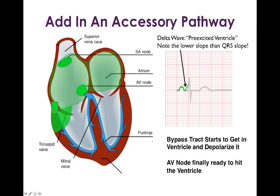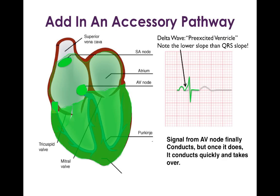By the time the AV node has fully depolarized and is ready to conduct down the His-Purkinje system into the ventricles, the bypass tract has had a head start and has depolarized part of the ventricle. From here on, the AV node takes benefit of the His-Purkinje system while the bypass tract continues depolarizing slowly. The remainder of the QRS looks pretty similar to a normal complex, with just a little extra depolarization from the pre-excited portion. This is how you get a delta wave when you have an accessory pathway.